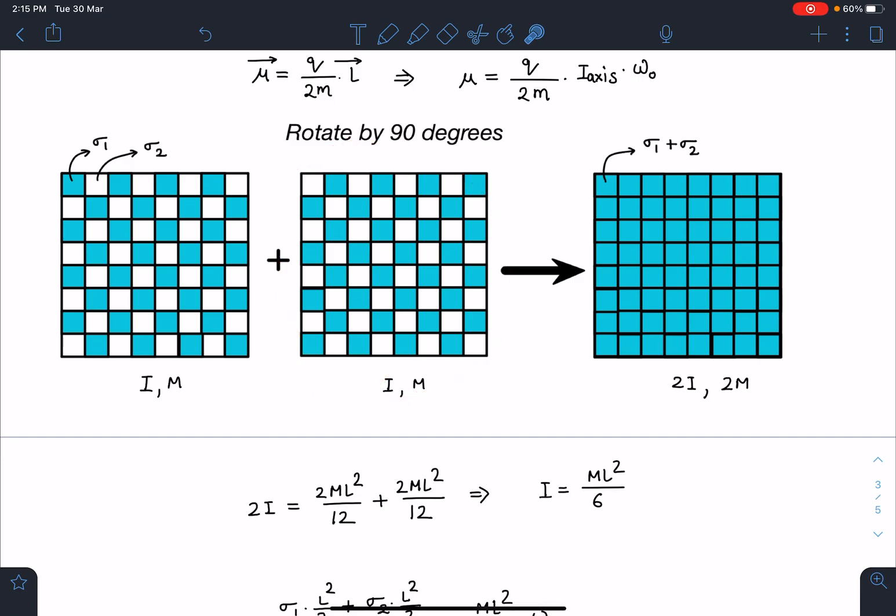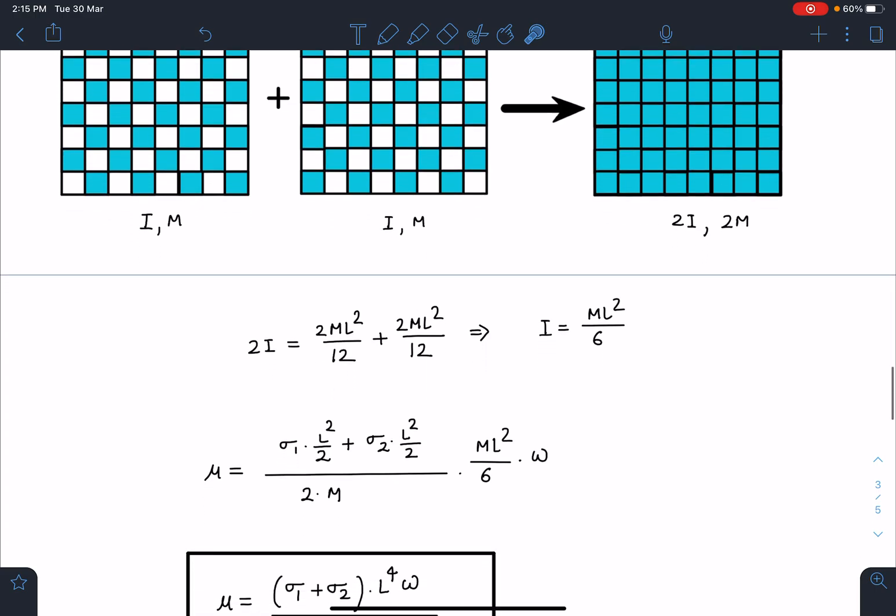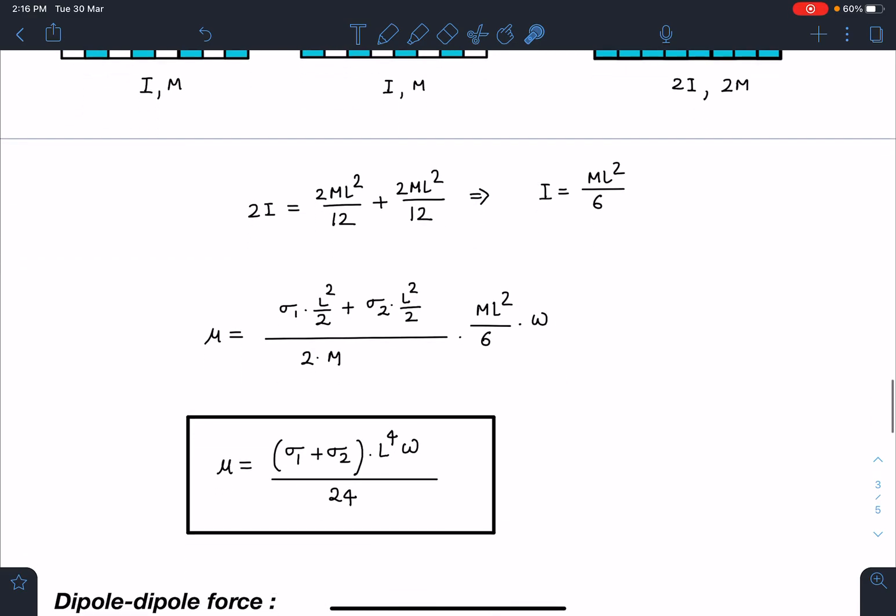And the charge on the chessboard I can write as Q = σ₁L²/2 + σ₂L²/2, so (σ₁ + σ₂)L²/2. We have half of the area, so this is the total charge present on this chessboard. Divided by 2M, its mass, times Iω—I is ML²/6 times ω. So μ value comes as (σ₁ + σ₂)L⁴ω/24. This is the magnetic moment.